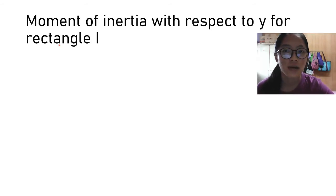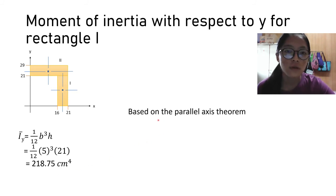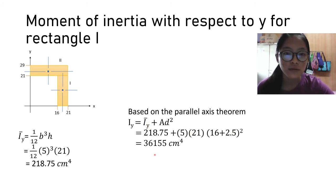Now we calculate the moment of inertia with respect to Y for the first rectangle. We use the formula which is Ibar_Y = (1/12)bh³. Ibar_Y is the moment of inertia with respect to the centroid of the rectangle. We substitute the values of b and h and get 218.75 cm⁴. Based on the parallel axis theorem, IY = Ibar_Y + Ad² because the Y axis is further away from the centroid. A is the area of the rectangle and d is the distance from the centroid to the Y axis. We substitute the value and get the answer which is 36,155 cm⁴.